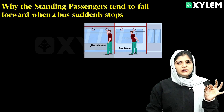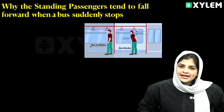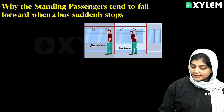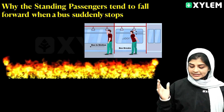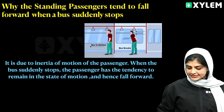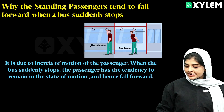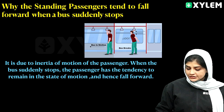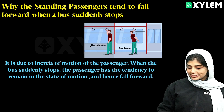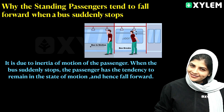It is due to the inertia of motion of the passenger. When the bus suddenly stops, the passenger has a tendency to remain in the state of motion, and hence falls forward.